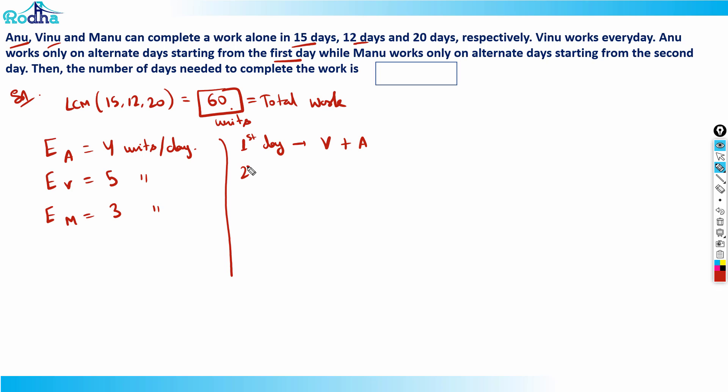On second day, Vinu and Manu will work because Vinu is working every day and Manu is working on alternate days starting from the second day. Then again third day, Vinu plus Anu will work—alternately Anu is coming. On fourth day, Vinu plus Manu will come because Manu is again on alternate days starting from the second day. This cycle goes on.